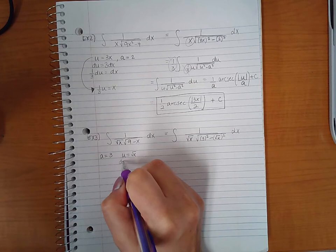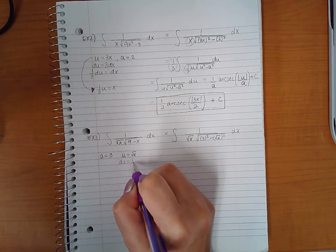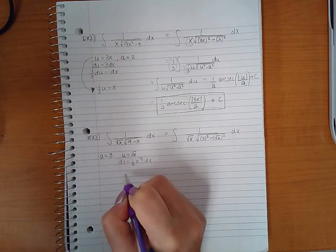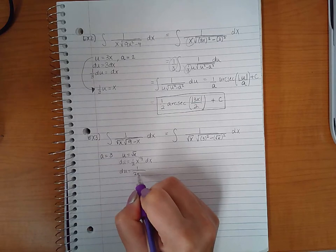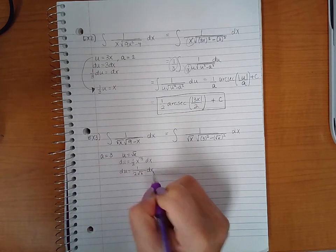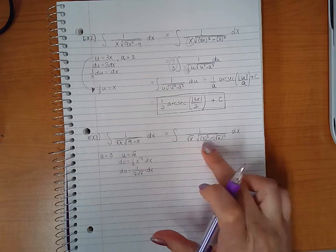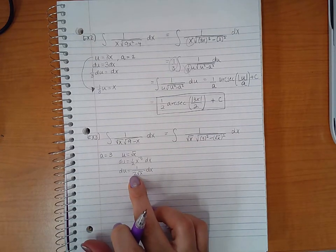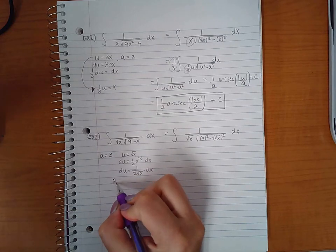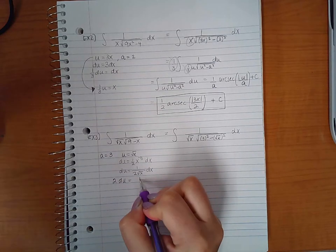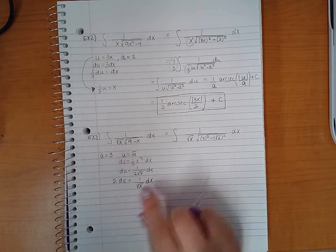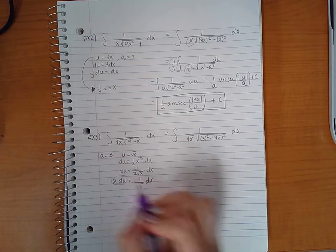Therefore, if I take the derivative of this equation, I get 1 half x to the negative 1 half dx. Or another way to write that is 1 over 2 square root of x dx. Now I do have the 1 over x, I'm sorry, the 1 over square root of x dx. So what I don't have is this 2 downstairs. So if I multiply both sides by 2, I end up with this statement here. So 1 over square root of x dx is going to be replaced with 2 du.